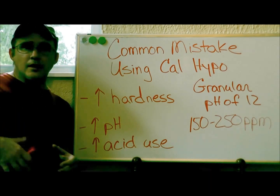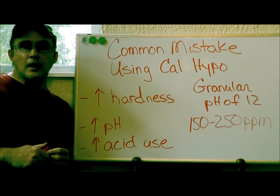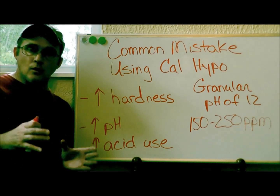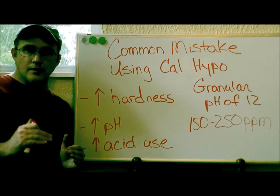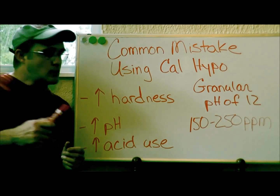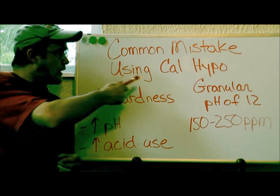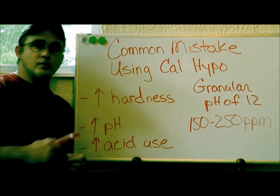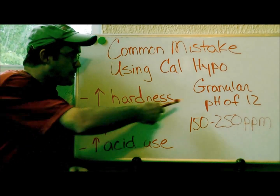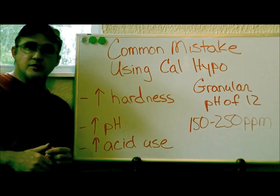Now I live in Florida, and I don't have a pool route here, but I help a lot of people, and I would say only use liquid chlorine — never use calcium hypochlorite or granular chlorine. What happens also when you use calcium hypochlorite or granular chlorine is, as you can see, it has a pH of 12.